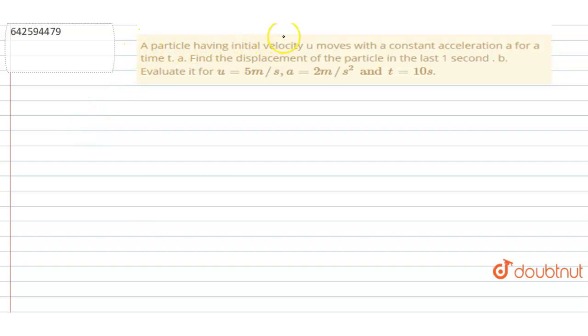Hello everyone. In this question, you can see a particle is having initial velocity u and it moves with the constant acceleration of a for time t. You have to find out the displacement of the particle in last one second. So let's see how to calculate it.